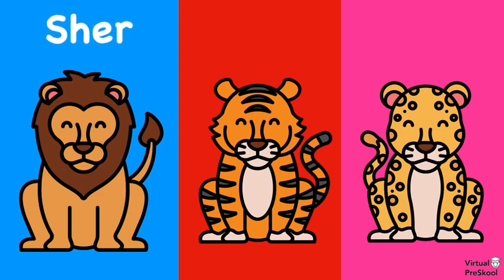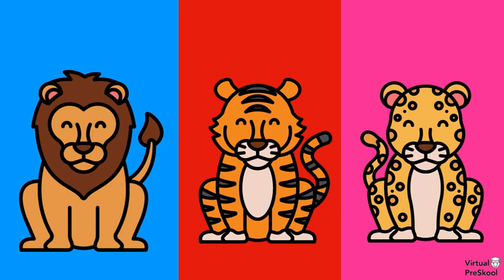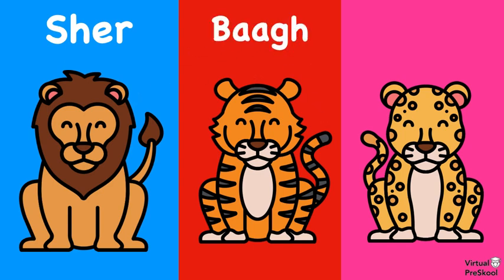Lion is Shed, Tiger is Baag, and Leopard is Tindua. Let's do those again. Lion is Shed, Tiger is Baag, and Leopard is Tindua.